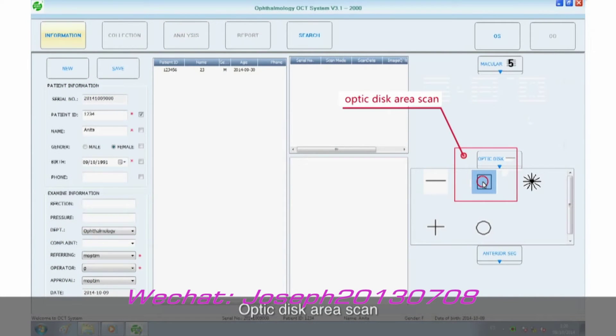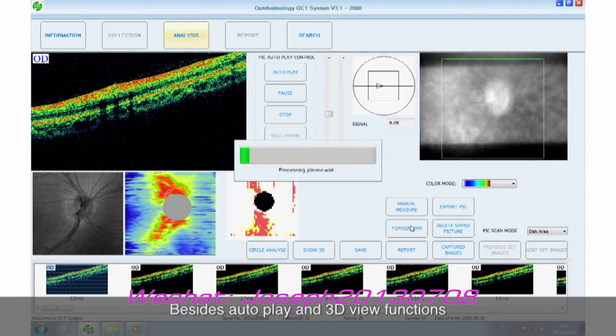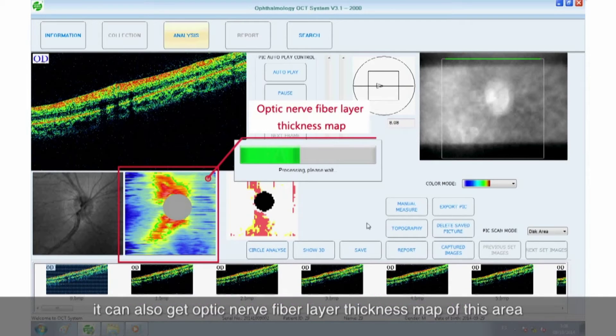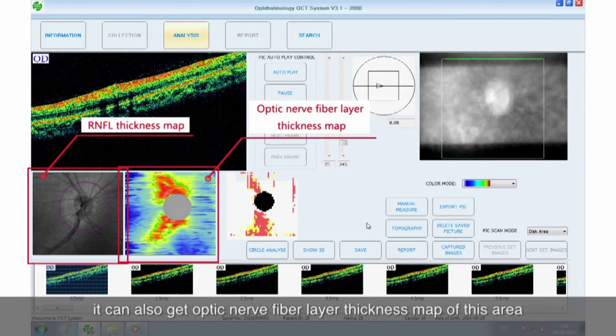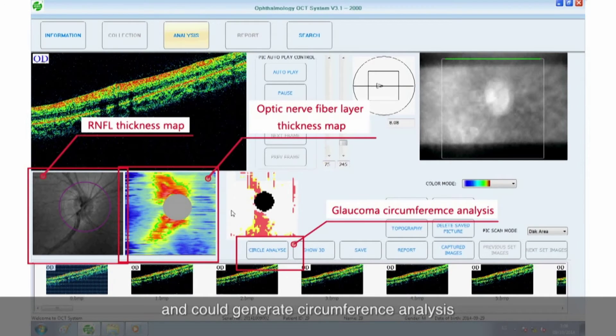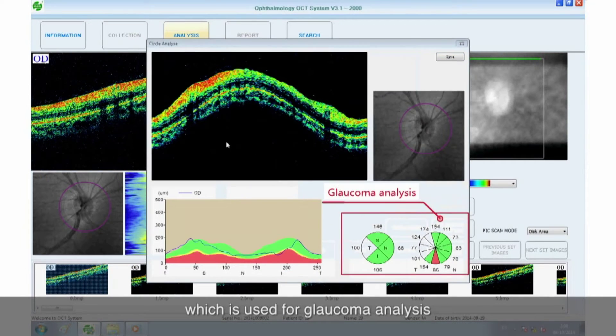Optic disc area scan. Besides autoplay and 3D view functions, it can also get optic nerve fiber layer thickness map of this area and could generate circumference analysis which is used for glaucoma analysis.